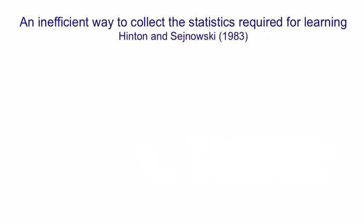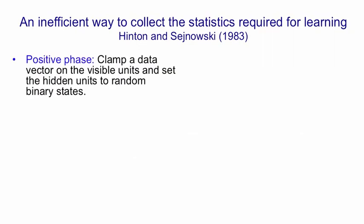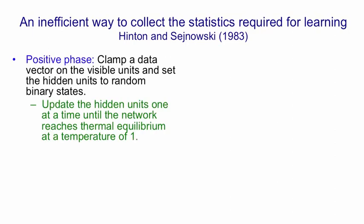Now in order to run this learning rule, you need to collect those statistics. You need to collect what we call the positive statistics, those are the ones when you have data clamped on the visible units, and also the negative statistics, those are the ones when you don't have data clamped and that you're going to use for unlearning. An inefficient way to collect these statistics was suggested by me and Terry Sejnowski in 1983. And the idea is, in the positive phase, you clamp a data vector on the visible units, you set the hidden units to random binary states, and then you keep updating the hidden units in the network, one unit at a time, until the network reaches thermal equilibrium at a temperature of one.